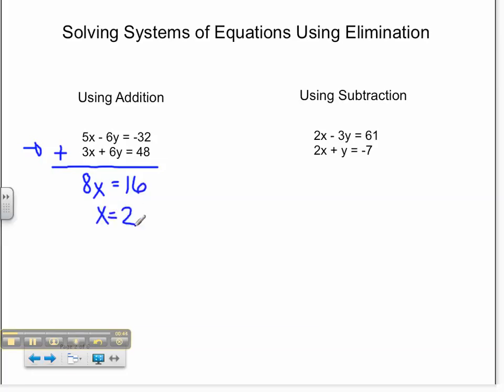5 times 2 minus 6y equals negative 32. 5 times 2 is 10 minus 6y equals negative 32. Subtract 10 on both sides, and I get negative 42. Divide both sides by negative 6, and y is equal to 7.